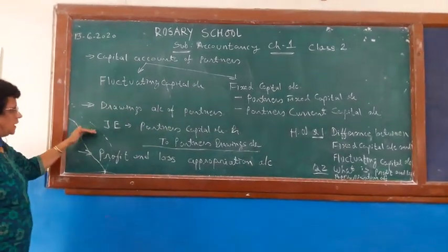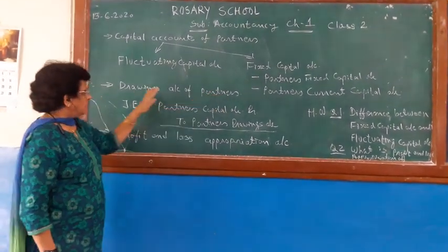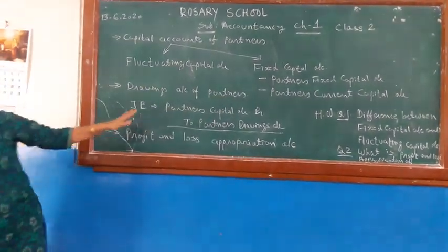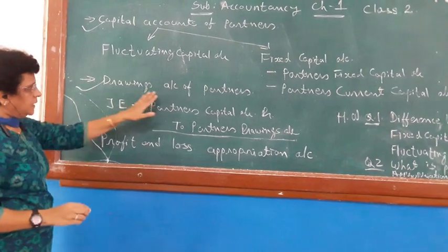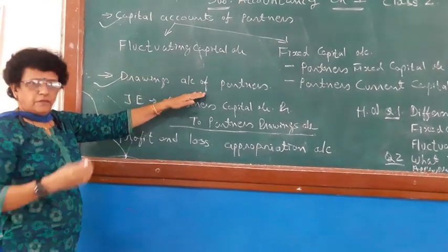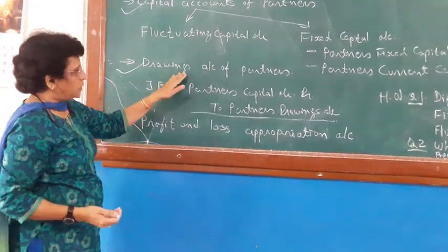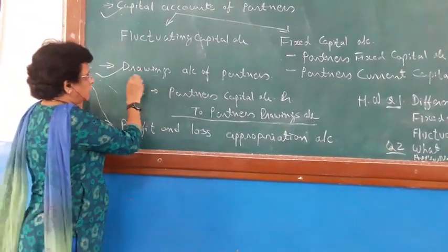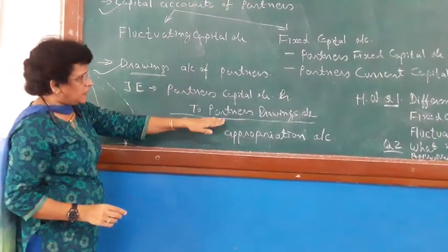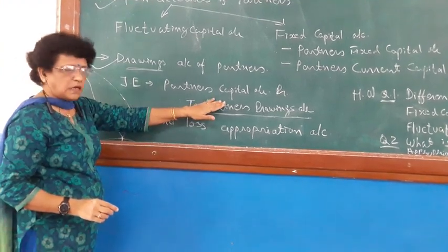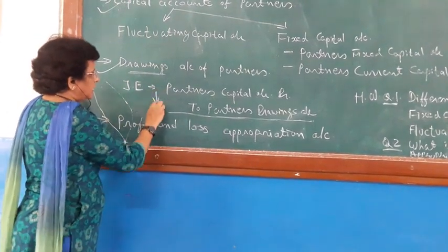The second point is the Drawing Account of a Partner. Partners bring capital into the business, and whenever necessary, they draw money from the business. So when a partner draws money, a Drawing Account is prepared. This Drawing Account is ultimately transferred to the Capital Account. Due to the drawings, the partner's capital decreases.